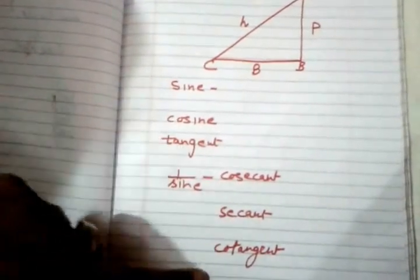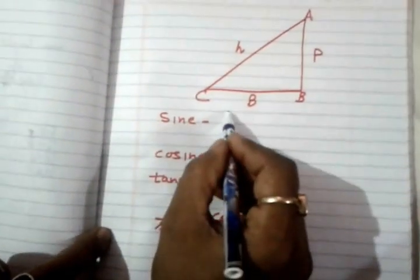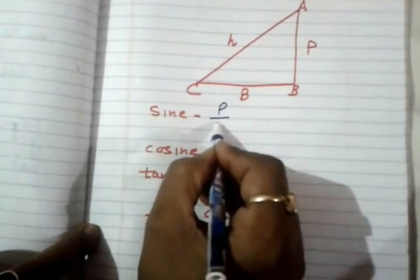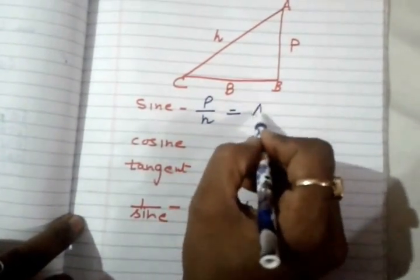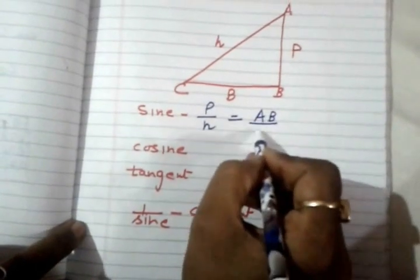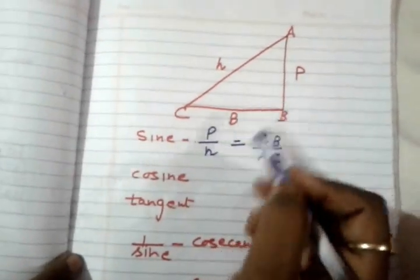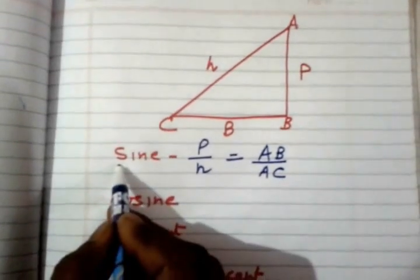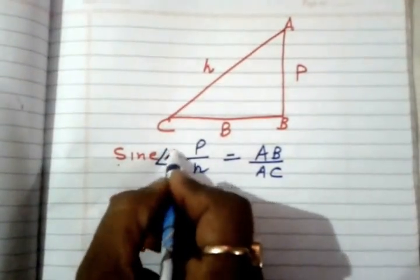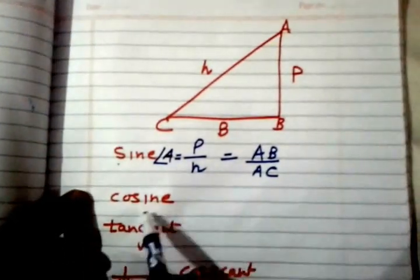Sine ratio is P by H, perpendicular upon hypotenuse, so it is going to be AB upon AC. P for perpendicular, H for hypotenuse. Then it is sine ratio, and here angle A will be considered. Now cosine is equal to base by hypotenuse.